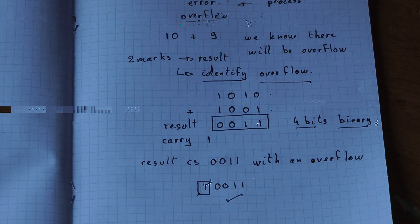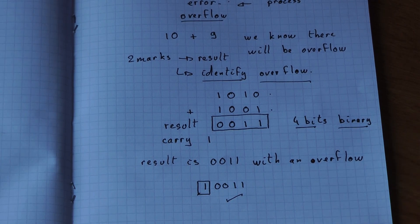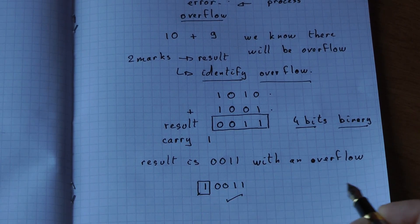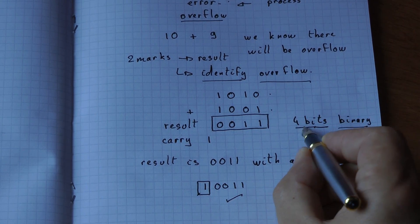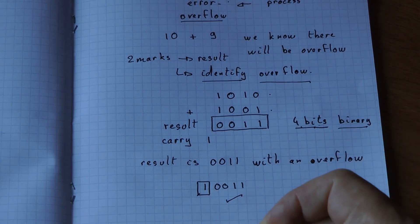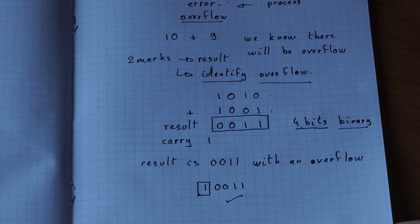In the exam, it could be an 8-bit binary question rather than 4-bit. It's exactly the same system, and you identify it the same way. My advice would be to write explicitly '4-bit binary overflow.' I look forward to seeing your work in our lessons.